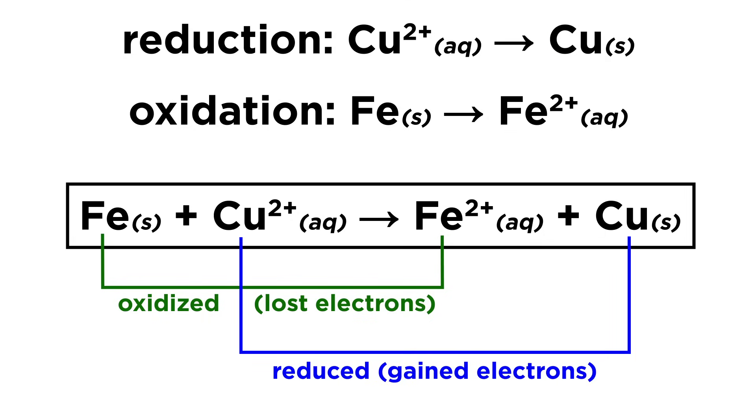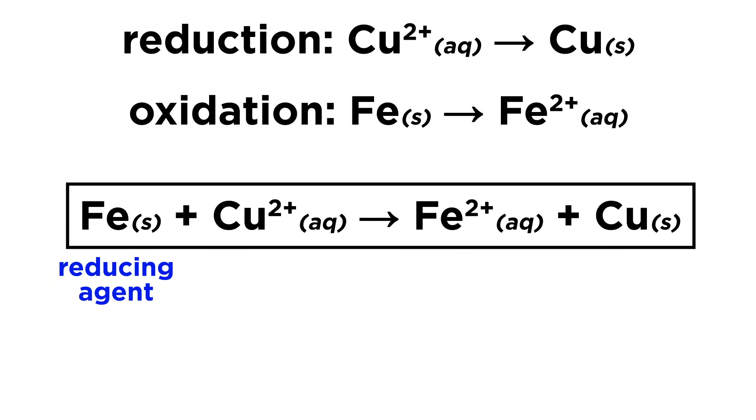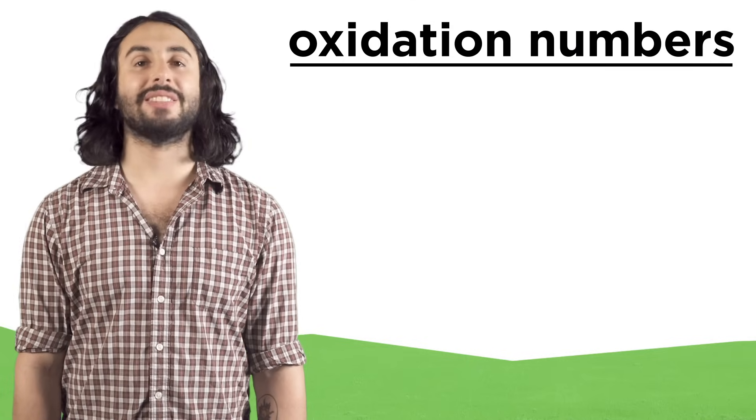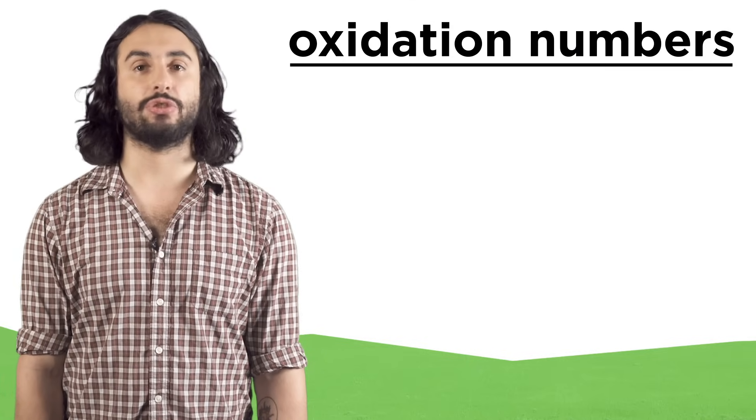The substance that is oxidized is the reducing agent because it's the thing that caused the reduction in the other substance. Likewise, the substance that is reduced is the oxidizing agent because it caused the oxidation in the other substance. We will use oxidation numbers to keep track of electron flow.